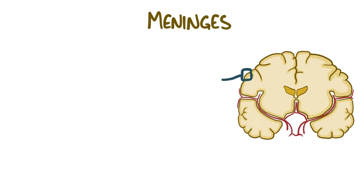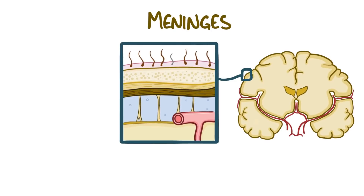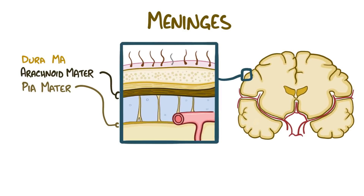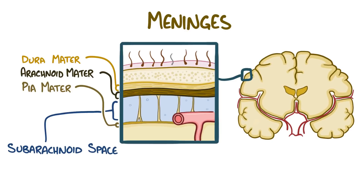Let's start with the three protective layers of the brain called meninges. The inner layer of the meninges is the pia mater, the middle layer is the arachnoid mater, and the outer layer is the dura mater. Between the arachnoid mater and the pia mater is the subarachnoid space, which houses cerebrospinal fluid, or CSF.